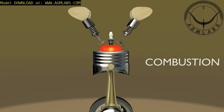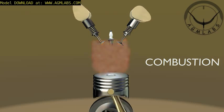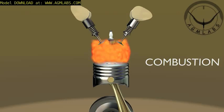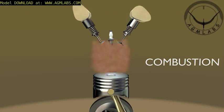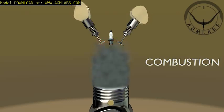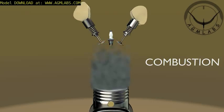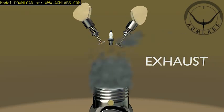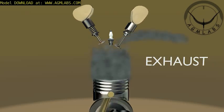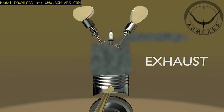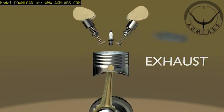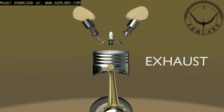Third, combustion stroke. The piston is now forced down by the pressure wave of the combustion of the fuel-air mixture. The engine's power is derived from this cycle. For the exhaust stroke, the exhaust valve is opened and the piston travels back up, expelling the exhaust gases through the exhaust valve.